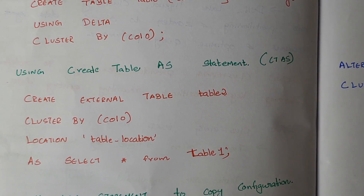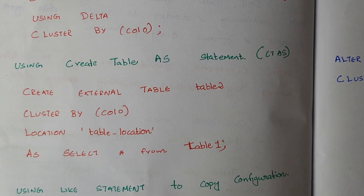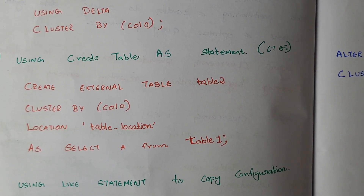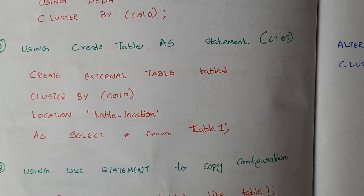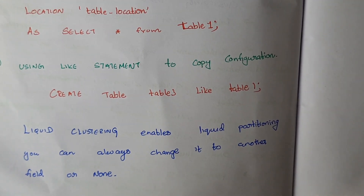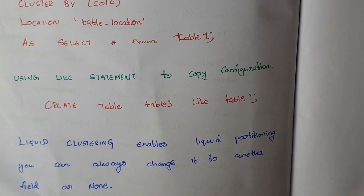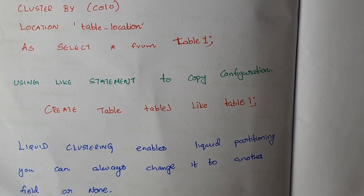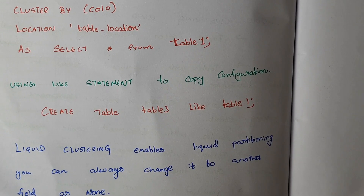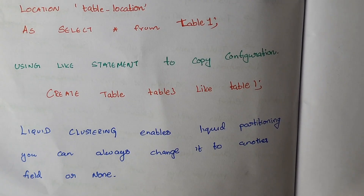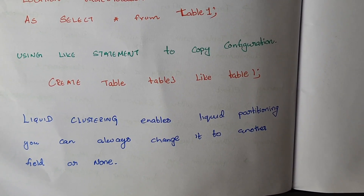Another way is using a LIKE statement to copy configurations from an existing liquid clustering table. For example: CREATE TABLE new_table_name LIKE existing_liquid_cluster_table — this copies all configurations including liquid clustering. Once liquid clustering is enabled, you can always change it to a different field or disable it by setting the cluster key to NONE.